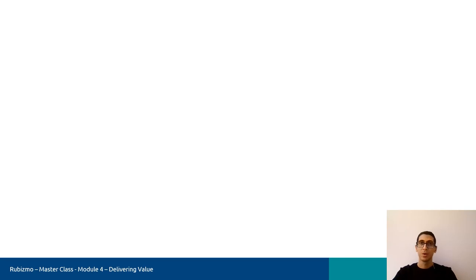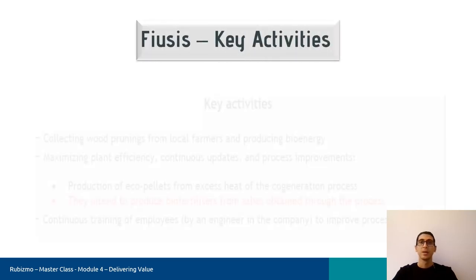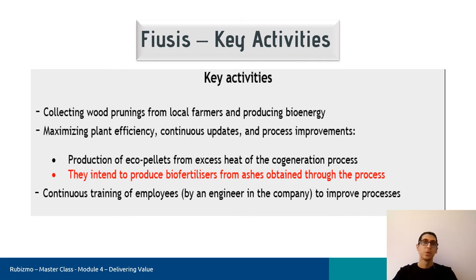Now let's look at the company's key activities. They collect wood prunings from local farmers and produce bioenergy. In addition, they maximize plant efficiency and improve processes — for example, they produce eco-pellets from the excess heat of the cogeneration process. They also intend to produce biofertilizers from the ashes obtained through the process, and they continuously train employees through an engineer within the company.